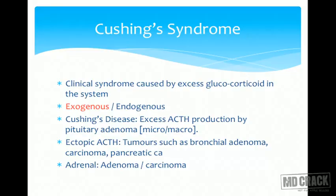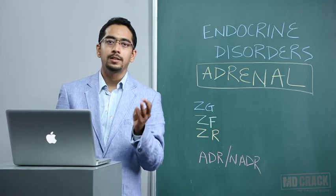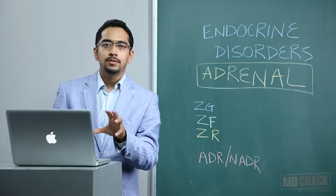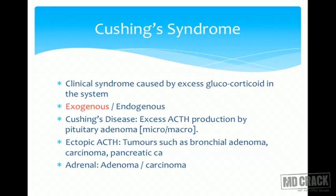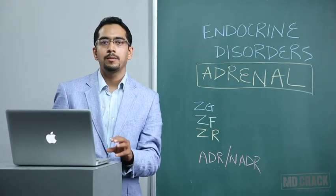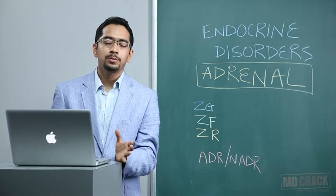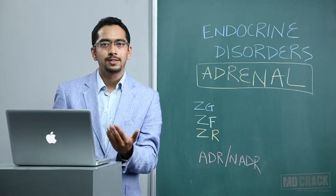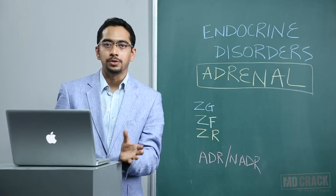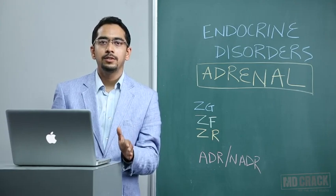Ectopic ACTH production is a rare cause of Cushing's syndrome; tumors that give rise to ectopic ACTH include bronchial adenoma, bronchial carcinoma, and pancreatic carcinomas — please remember these three as they are often asked. Adrenal adenoma and adrenal carcinoma are rare in adulthood, more commonly seen in infants and children. Adrenal carcinomas typically produce more than one hormone — mixed hormone-producing tumors — so we can have features of Cushing's syndrome along with mineralocorticoid and sex steroid excess, such as virilization. If you see such combined features, suspect adrenal carcinoma.